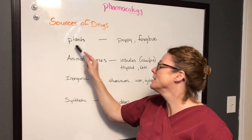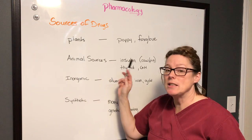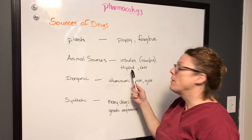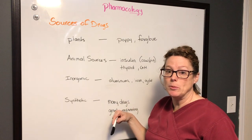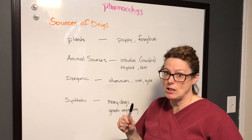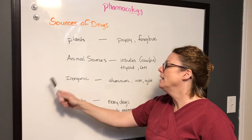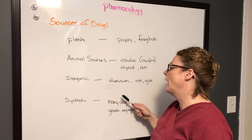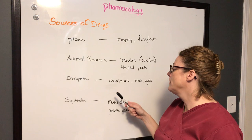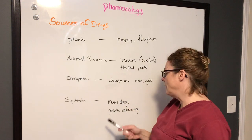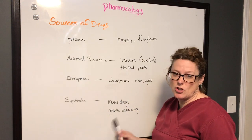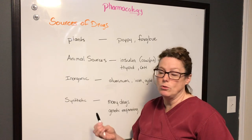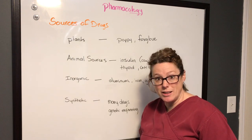Animal sources: initially when insulin was first brought out it came from a cow and a pig's pancreas. Thyroid and growth hormone also initially came from animal sources such as the hypothalamus. There are also inorganic drugs such as aluminum, iron, and gold — many of these are used to treat a variety of symptoms. And now synthetically, many of our drugs are made synthetically where scientists are genetically engineering elements to create a product that will treat, cure, or diagnose an illness.